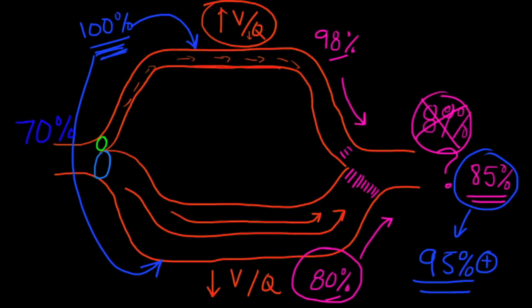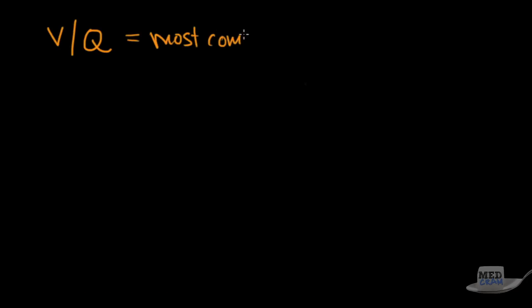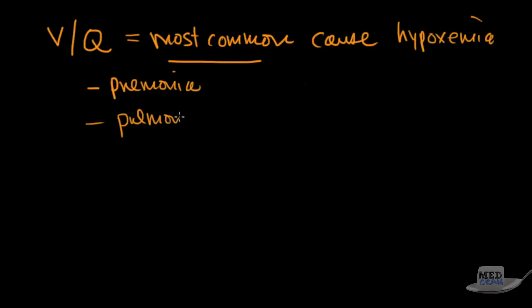Now let me go ahead and show you an example of VQ mismatch. VQ mismatch is the most common—if they ever ask you that on a test, it is the most common cause of hypoxemia. The reason for that is because the causes are so common: for instance, pneumonia, pulmonary embolism, COPD—all of these are reasons for the patient to have VQ mismatch. To the point where, if they ever ask you this on a question and you don't know the answer and you see VQ mismatch, I would select that one.